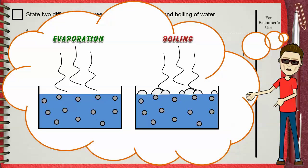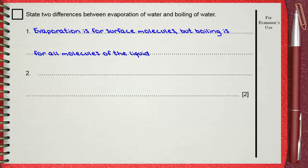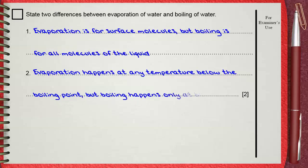So when asked for two differences between evaporation of water and boiling of water: evaporation is for surface molecules, but boiling is for all molecules of the liquid. Number two, evaporation happens at any temperature below the boiling point, but boiling happens only at boiling point.